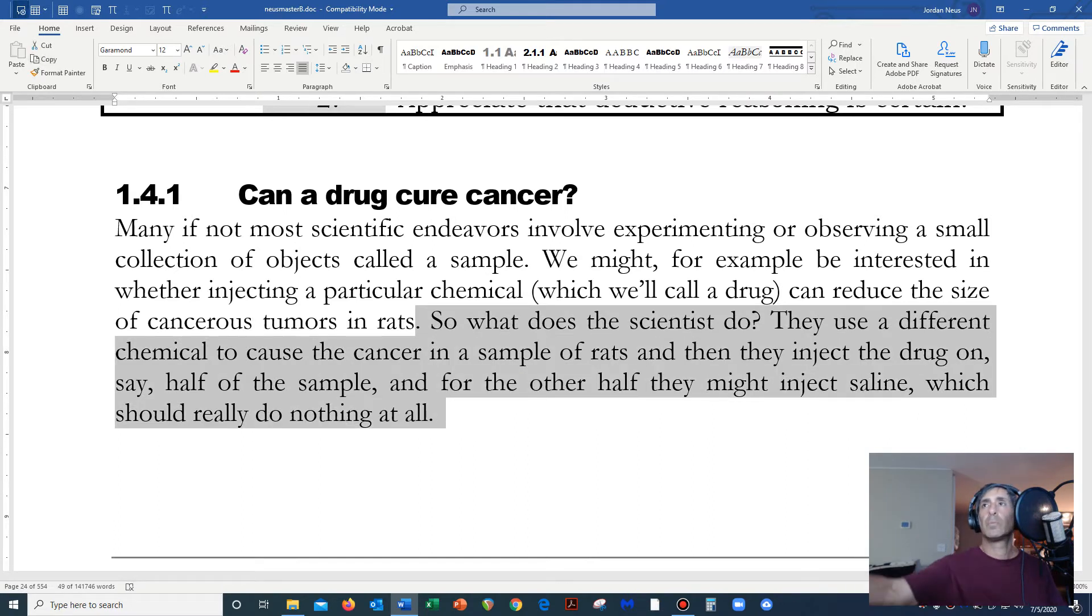So we give the rats cancer, and our scientists know how to give cancer to rats really efficiently. We're very good at giving cancers to rats. Just, you know, as a little aside to let you know. So what does the scientist do? They use a different chemical to cause the cancer in a sample of rats, and then they inject the drug on, say, half of the sample, and for the other half, they might inject saline, which should really do nothing at all.